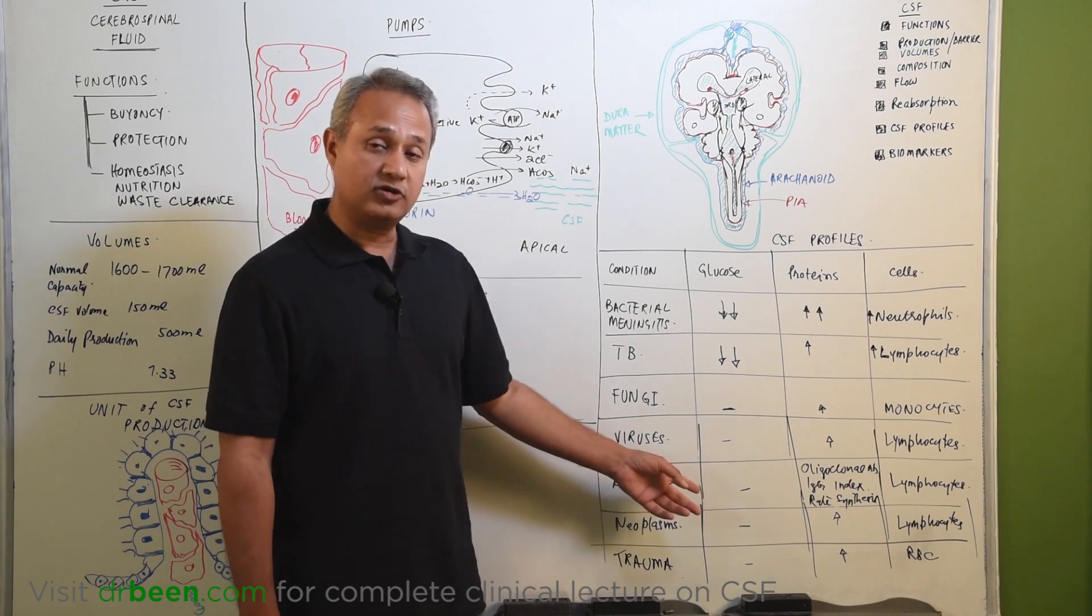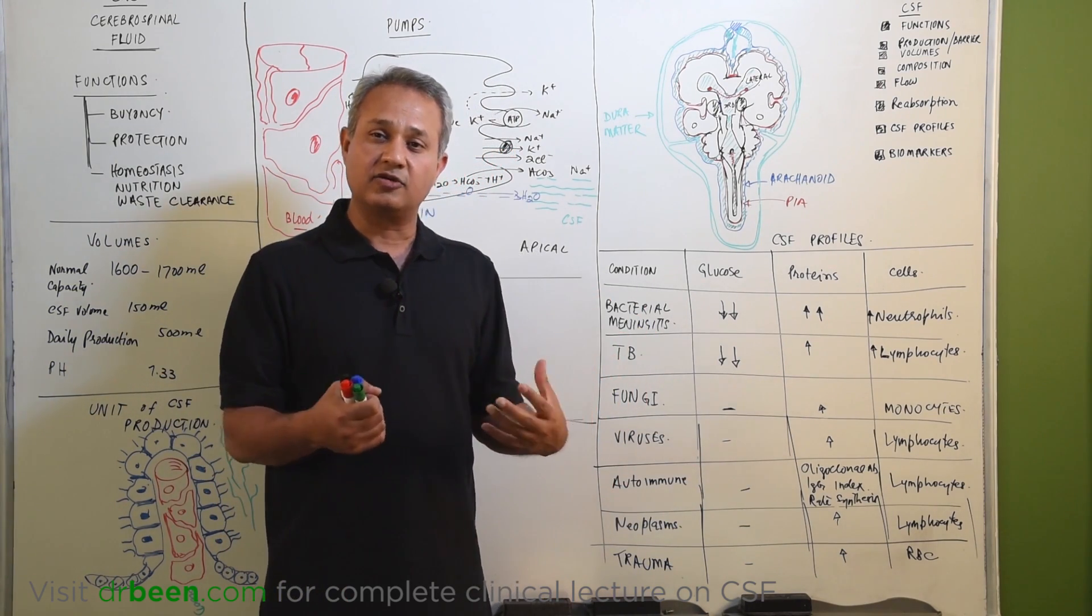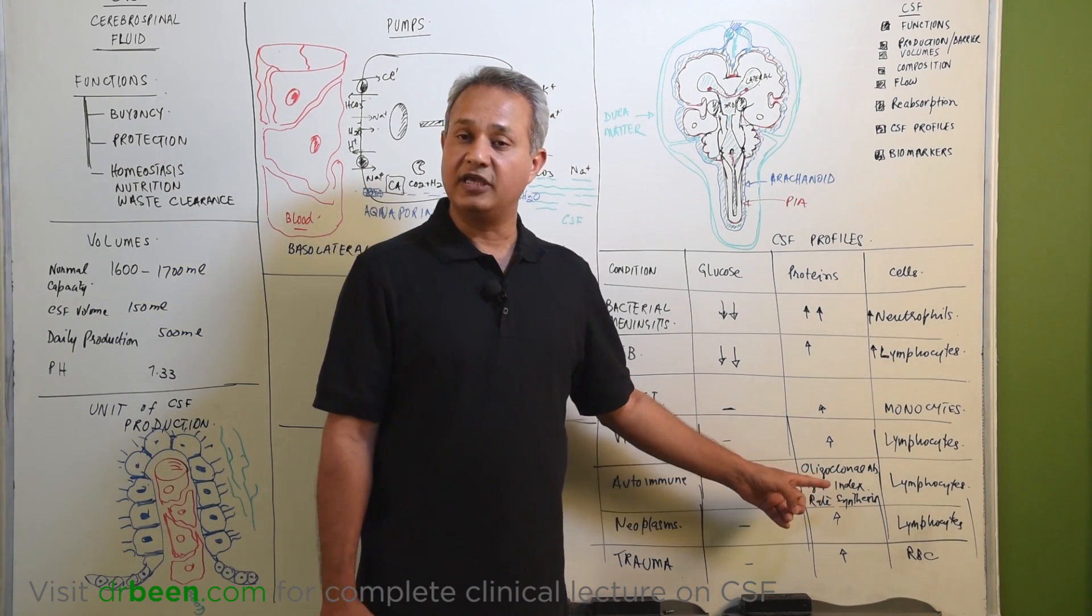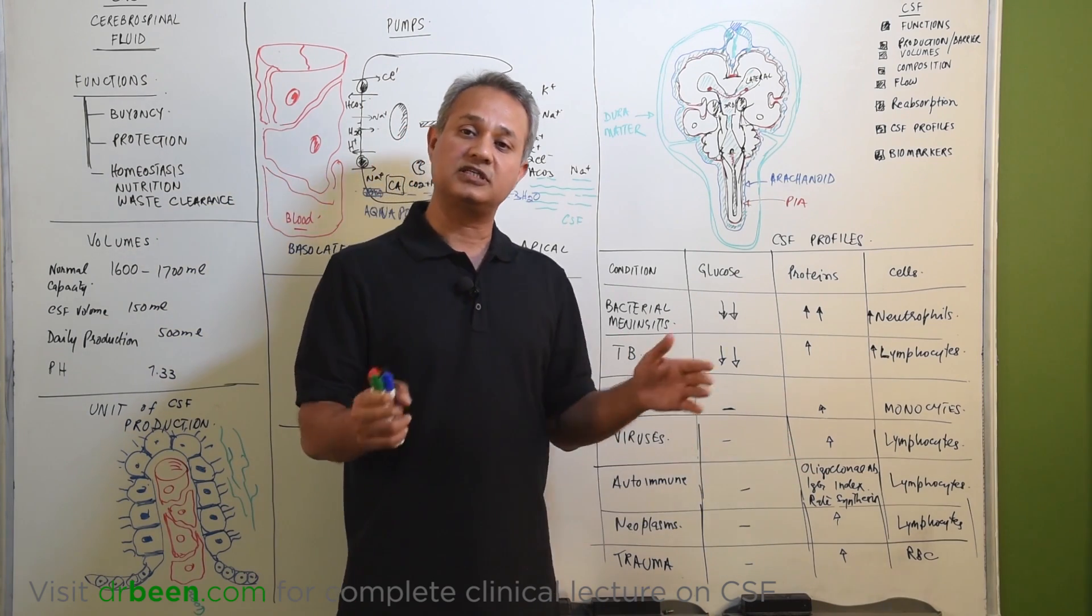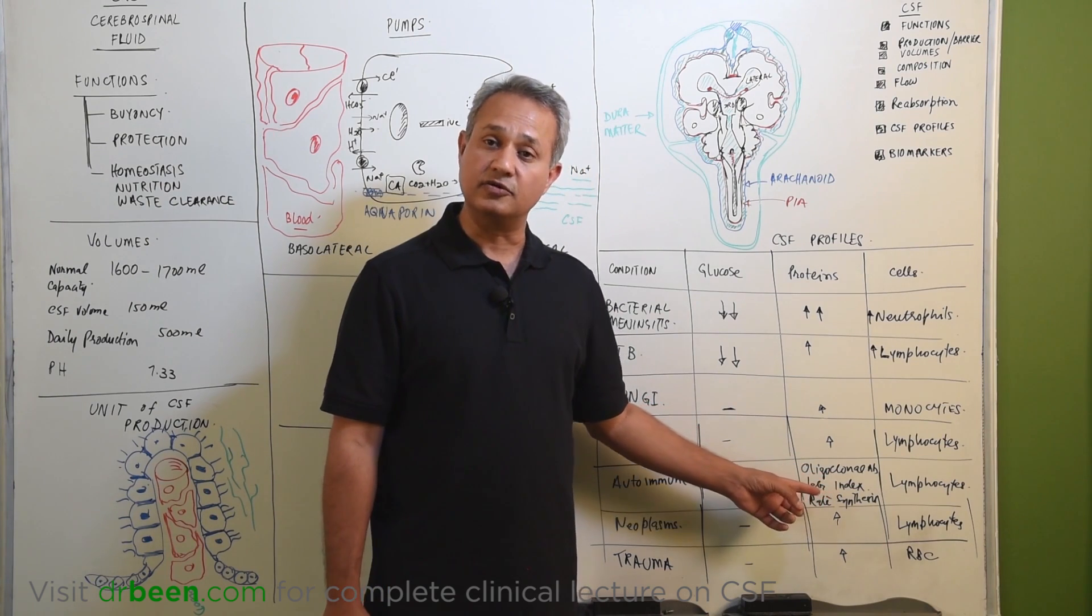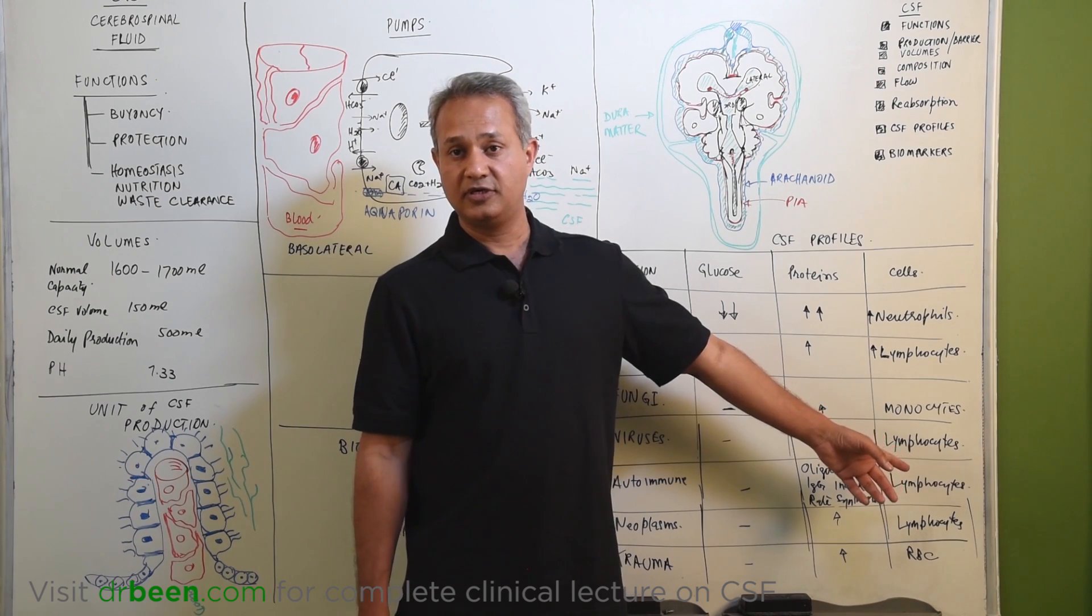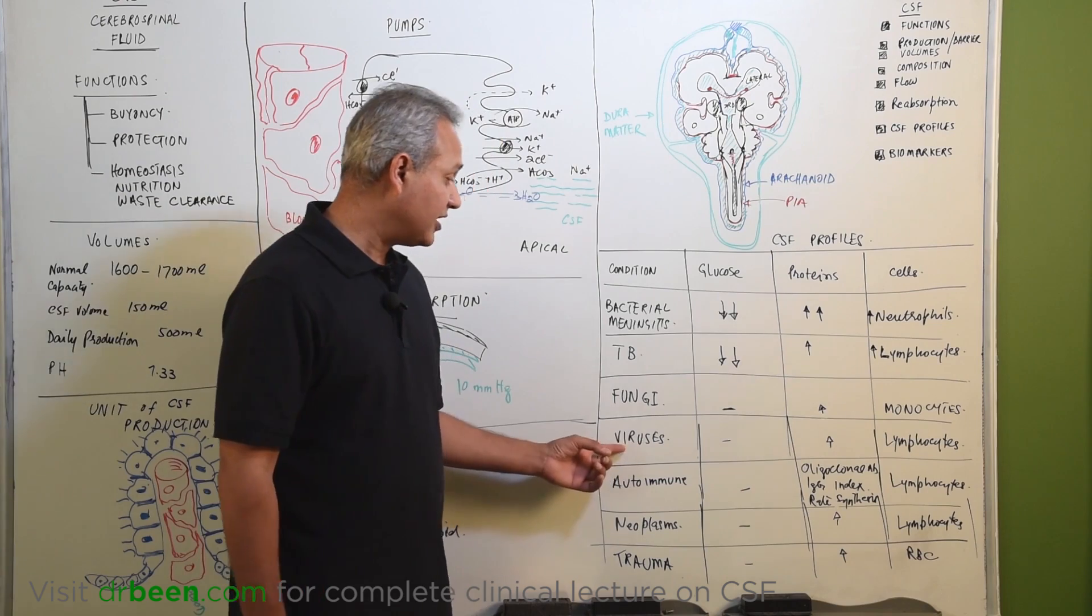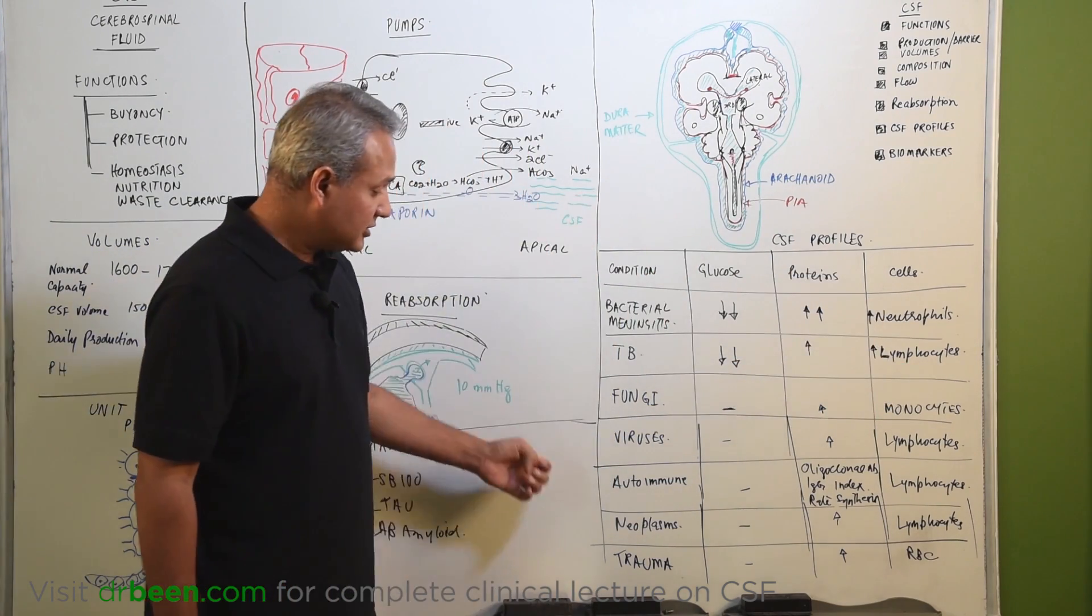Autoimmune diseases, again no change to the glucose. The B cells or T cells present inside the system are not going to eat the glucose. There will be presence of the IgG or oligoclonal antibodies depending upon the type of autoimmune disease you are handling. That is the extra test that you have to do in addition to the normal profiles and then lymphocytes will be increased. Lymphocyte increase in autoimmune, lymphocyte increase in viruses and lymphocyte increase in TB which is bacterial.